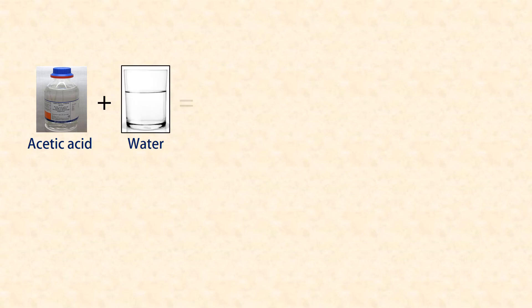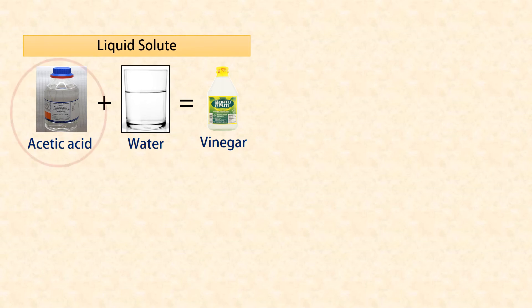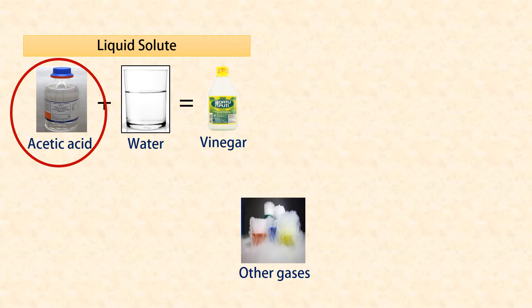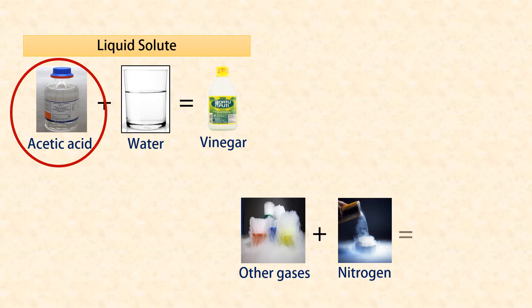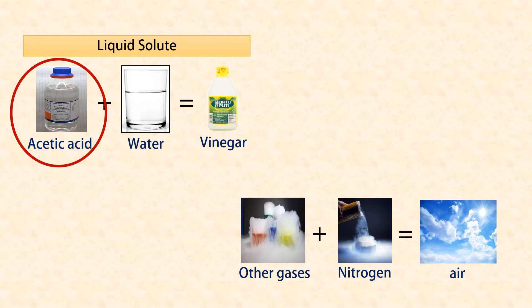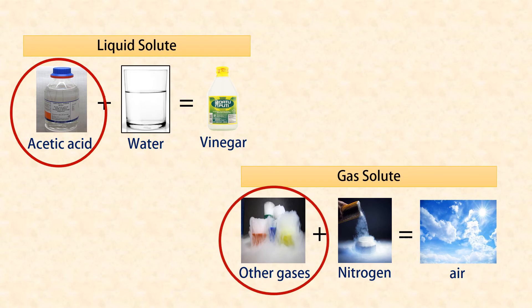Other examples include acetic acid dissolved in water to produce vinegar. The liquid solute here is acetic acid — it dissolves in water. Aside from that, oxygen, argon, and other gases dissolve in nitrogen to make up the air. The gas solutes here are oxygen, argon, and other gases; they dissolve in nitrogen.